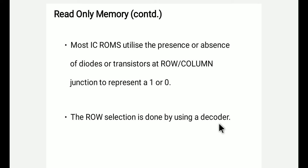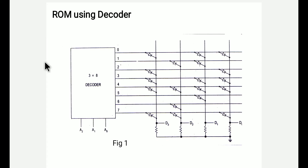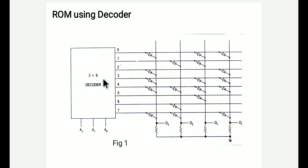The row selection is done by using the decoder. This is the simple circuit of the ROM using a decoder. The programming is done by using the decoder.